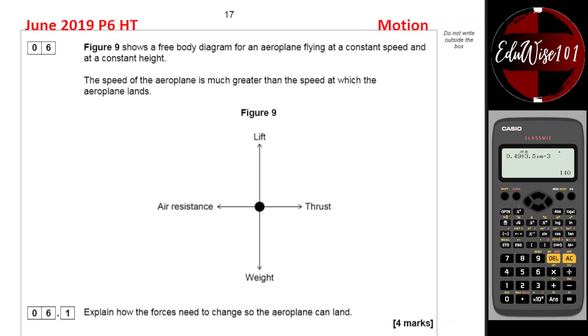Question number six from the June 2019 AQA Physics Combined Science Higher paper. This question is on the topic of motion. Figure nine shows a free body diagram for an airplane flying at a constant speed at a constant height. The speed of the airplane is much greater than the speed at which the airplane lands.